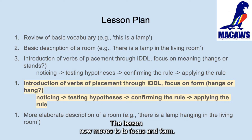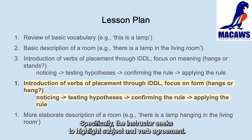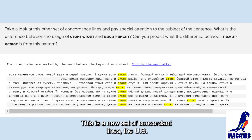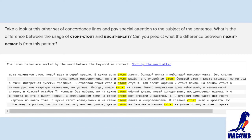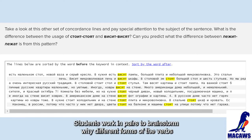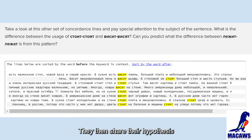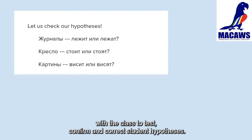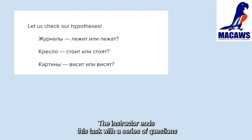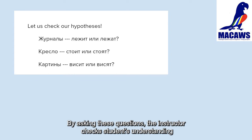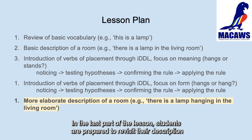The lesson now moves to focus on form — specifically, the instructor seeks to highlight subject-verb agreement. This is a new set of concordance lines that students see while completing their next task. The format is the same: students work in pairs to brainstorm why different forms of the verbs of placement are used, paying attention to their immediate context. They then share their hypotheses with the class. To test, confirm, and correct student hypotheses, the instructor ends this task with a series of questions, checking students' understanding of verb conjugation.